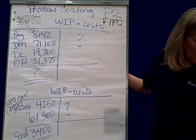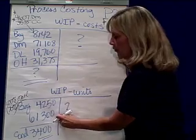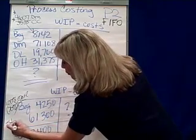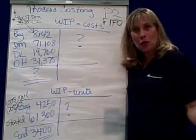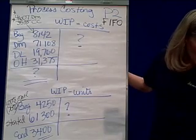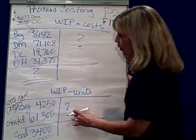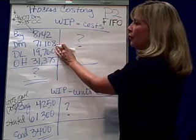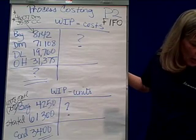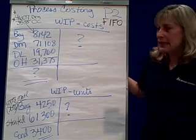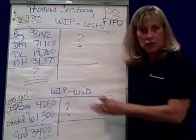During June, 61,300 pounds of fruit were added — that's what we started during the period. The fruit cost $71,108 in direct materials. We also had direct labor cost for the month of $19,760, and overhead applied of $31,375. You can see where these numbers come from as well.